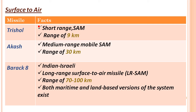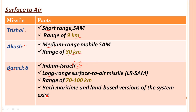The next category is surface-to-air missiles — three missiles. Trishul is short range, Akash is medium range, and Barak is long range. Trishul covers about 9 kilometers, Akash covers 30 kilometers, and Barak covers up to 100 kilometers. An important point: Barak is jointly developed by India and Israel. Barak has two variants — naval and land-based.